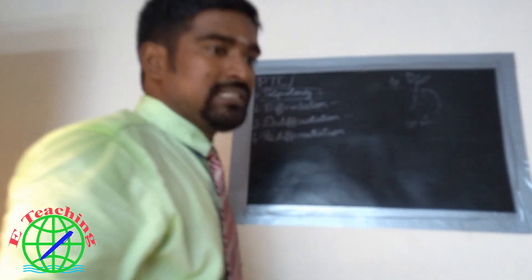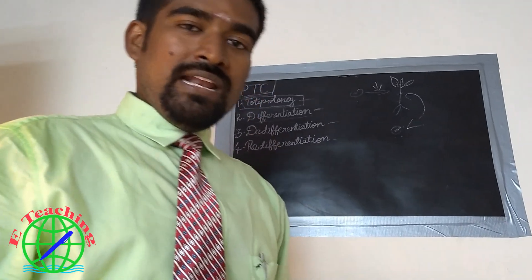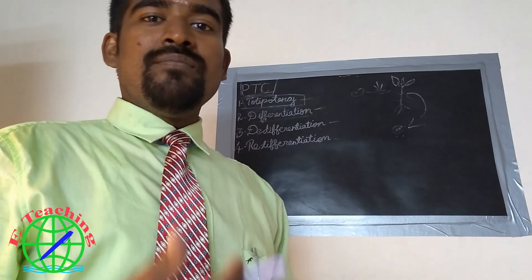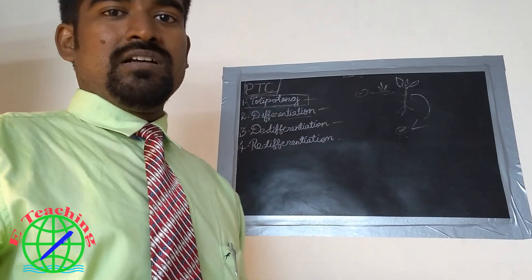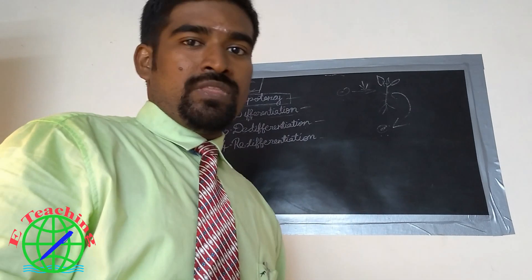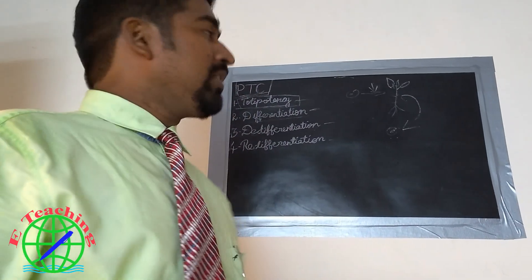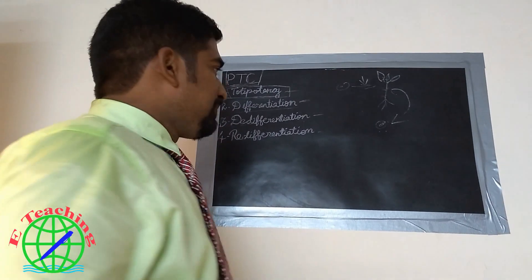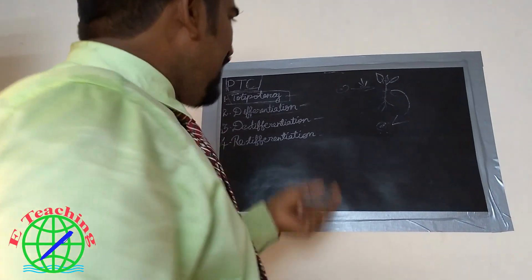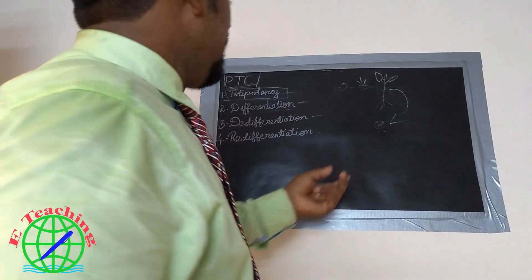A meristematic cell keeps on dividing and can produce any type of tissue. Plant growth is very important for meristematic cells, as they are the fundamental units driving cell division and tissue formation.